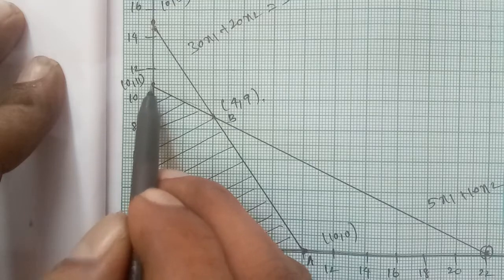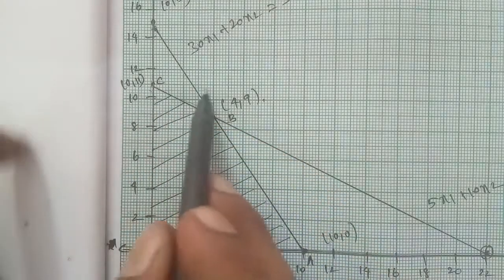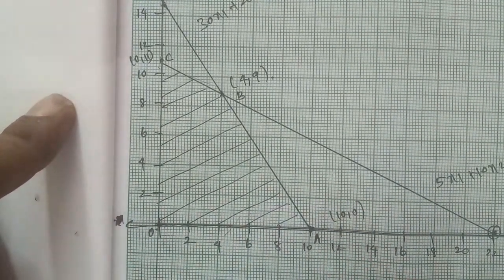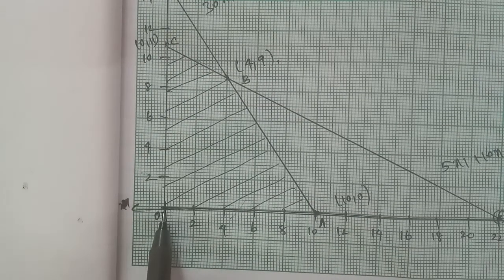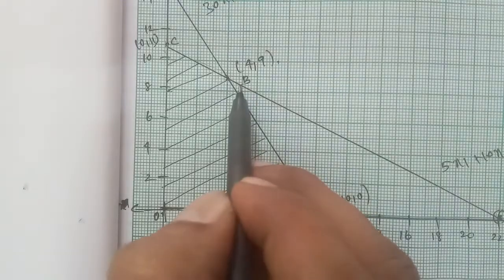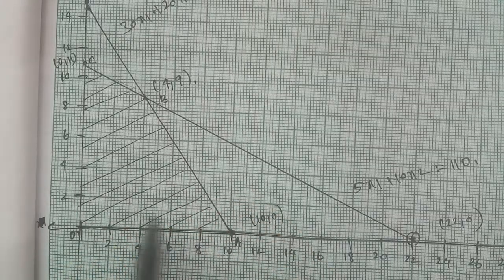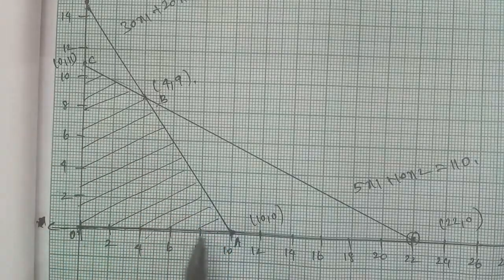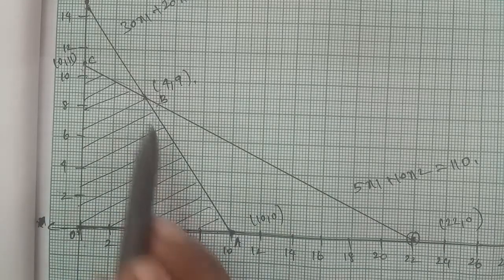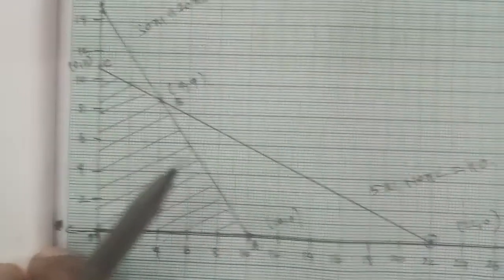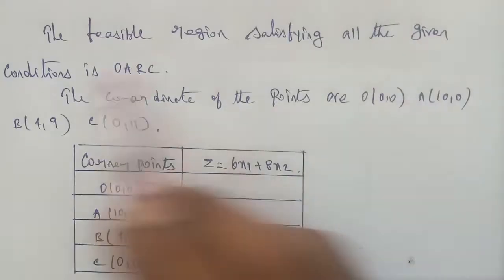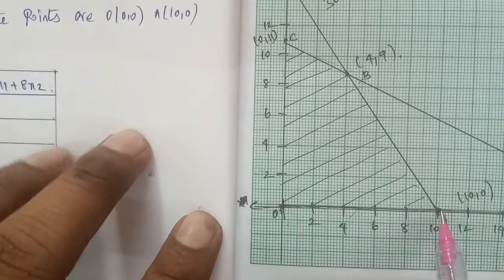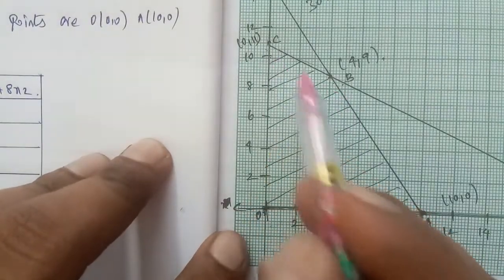The feasible region satisfying all the given conditions covers points O, A, B, C. For maximization, the feasible region is below the intersection lines; for minimization it is above. The origin is O, and the corner points are A, B, and C. The feasible region is shaded covering O, A, B, C.